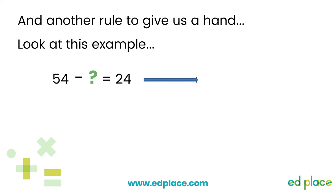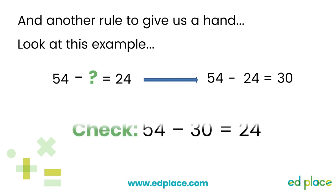Here's another really useful rule to help us find missing numbers. If there is a missing number in the middle of the sentence, do a subtraction using the numbers you have been given to solve it. So in this example we do 54 take away 24, which equals 30. Remember, go back to the original question, pop in the missing number you have found and check your answer: 54 take away 30 equals 24.